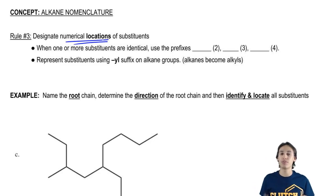So what we're going to do is we're going to use prefixes. These prefixes are going to tell us how many of that type of substituent we have. So the prefix for two is di, the prefix for three is tri, and the prefix for four is tetra.